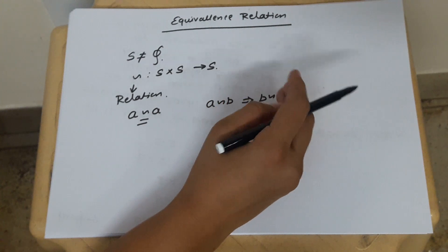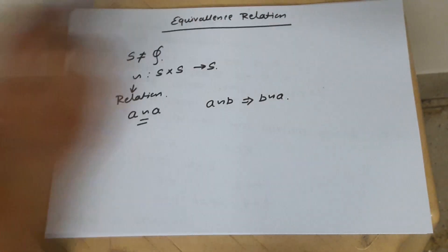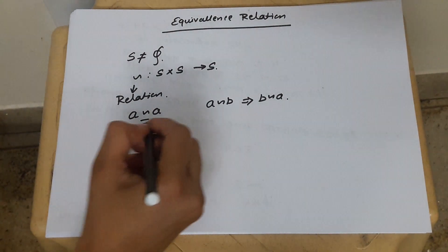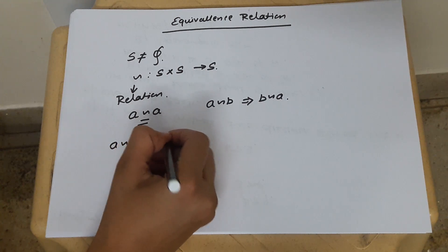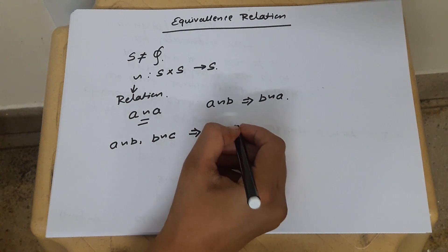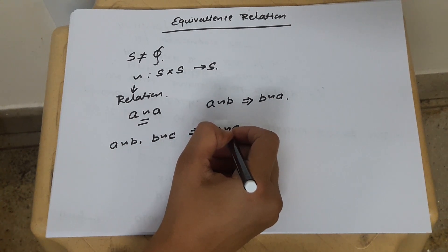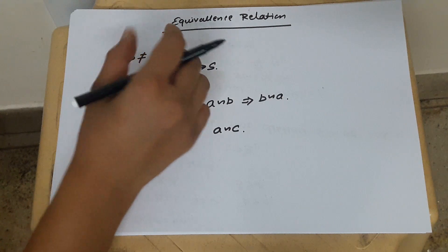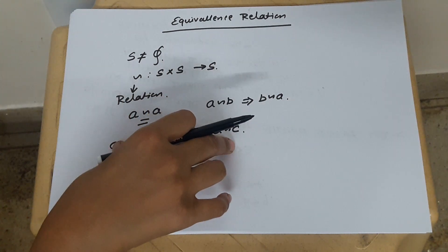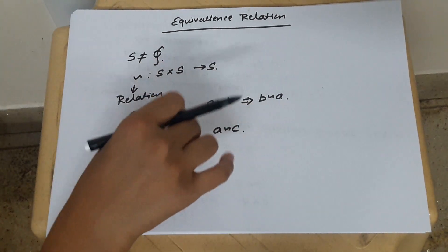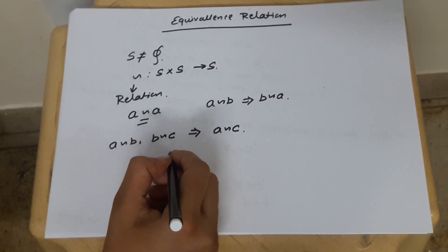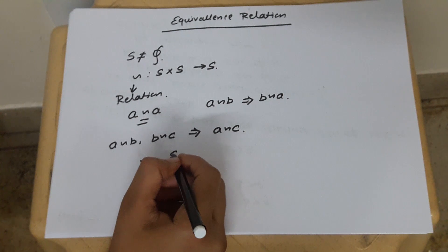The symmetric property should hold for all A, B belonging to S. The third property is transitivity: if A is related to B and B is related to C, then A must be related to C. If a relation defined on any non-empty set is reflexive, symmetric, and transitive, then such a relation is called an equivalence relation on set S.